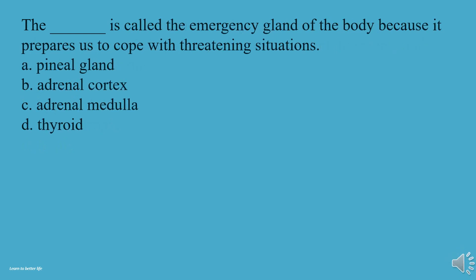What is called the emergency gland of the body because it prepares us to cope with threatening situations? A, Pineal gland. B, Adrenal cortex. C, Adrenal medulla. D, Thyroid. The answer is C, Adrenal medulla.